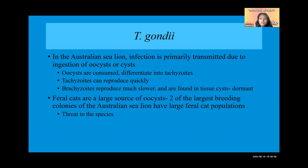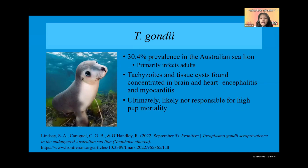Feral cats are a large source of oocysts. Two of the largest breeding colonies of the Australian sea lion — Dangerous Reef and Seal Bay on Kangaroo Island — have huge feral cat populations, making toxoplasmosis a significant threat. However, there is only around 30.4% prevalence in the Australian sea lion population, and the species is only affected when they are adults; no cases in pups were recorded in the 2019 study.